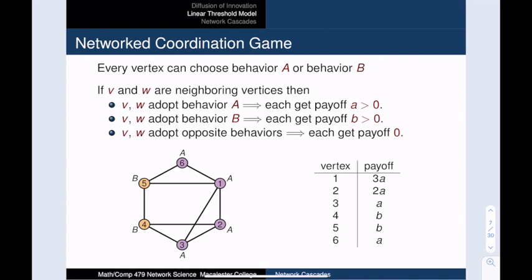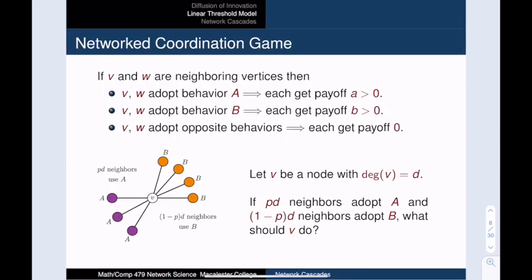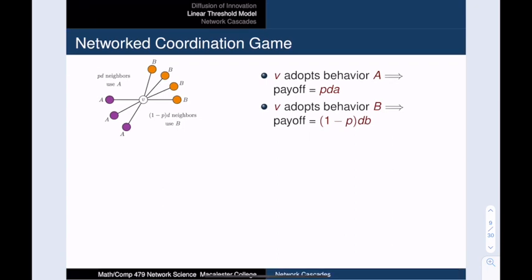This slide shows an example of this coordination game. Here vertex 1 has a payoff of 3 times A, because three of its neighbors have adopted behavior A. Meanwhile, vertices 4 and 5 each get a payoff of B, because these neighboring vertices are the only two vertices with behavior B. So we're going to view adoption as a process, and here is a vertex V that is trying to decide whether to adopt behavior A or behavior B. All of its neighbors have already chosen. P times D have chosen A, and 1 minus P times D have chosen B. So what behavior should V adopt? Behavior A or behavior B? Pause the video and figure out which choice leads to a bigger payoff.